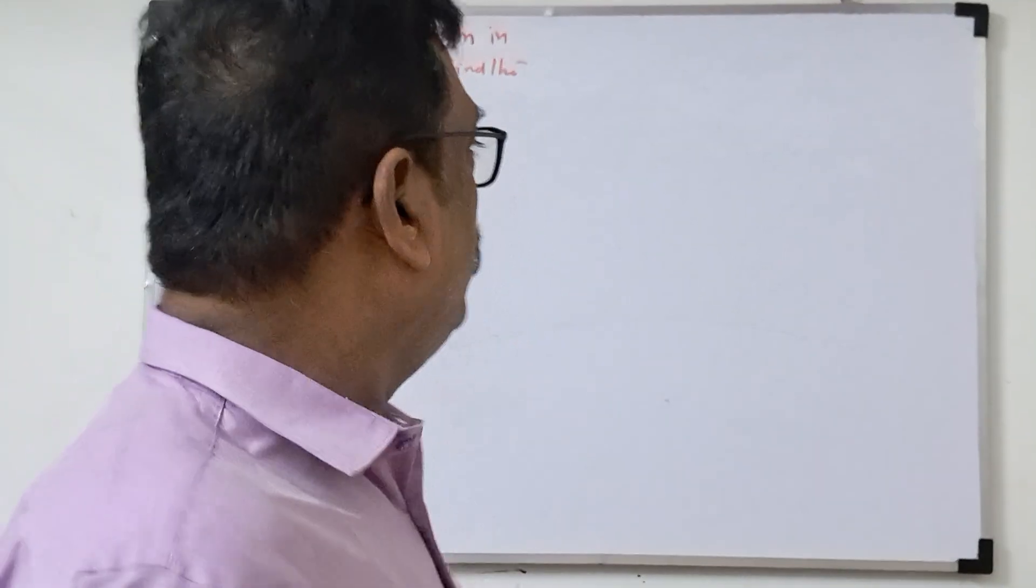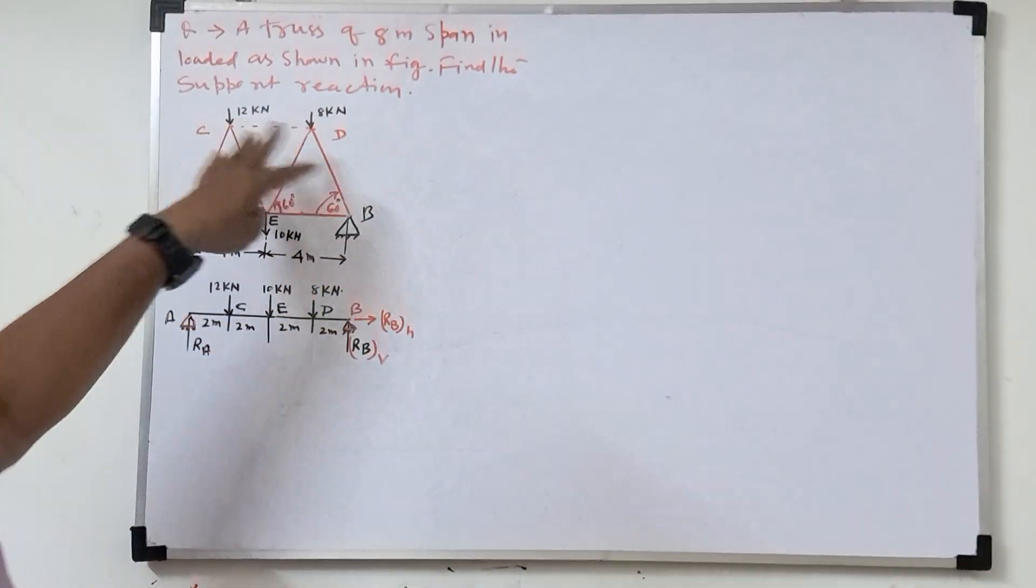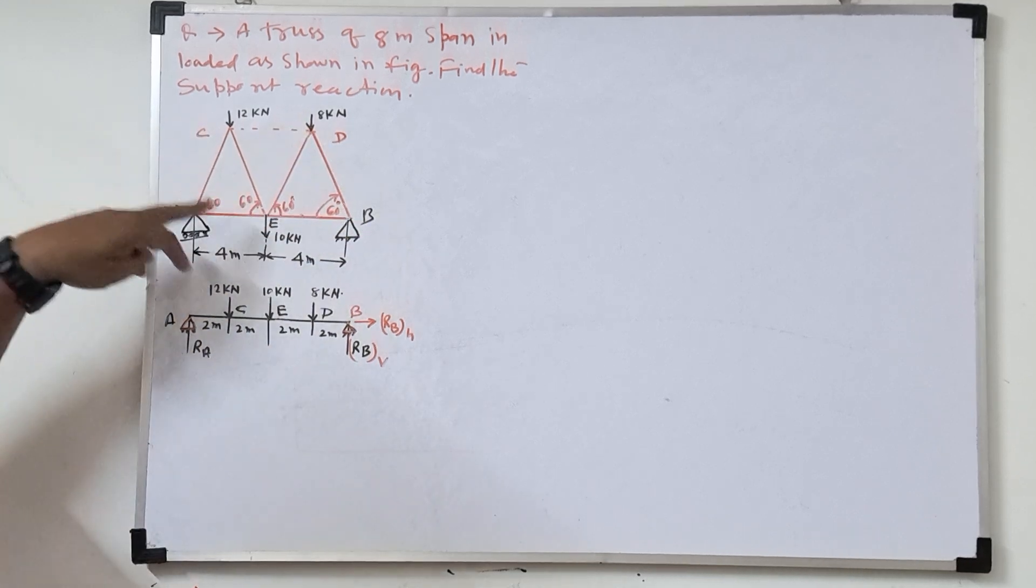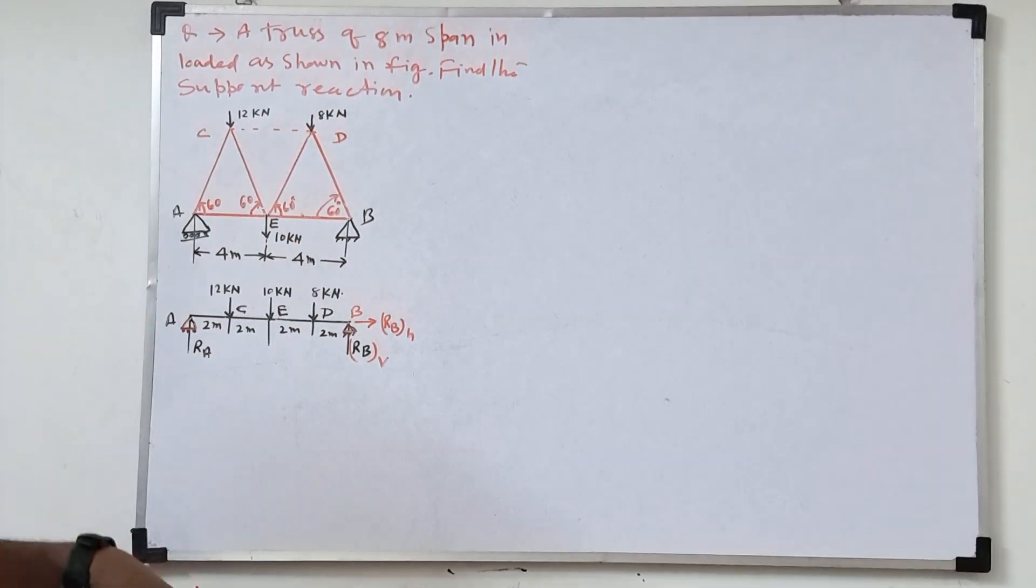Welcome to my YouTube channel. Today I am going to give the final support reaction in the truss form. If truss will be there, like A, C, E, D, B, truss form. So how to find the support reaction?